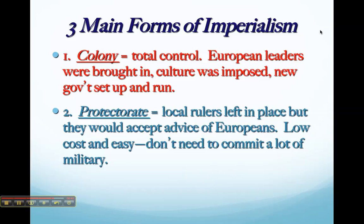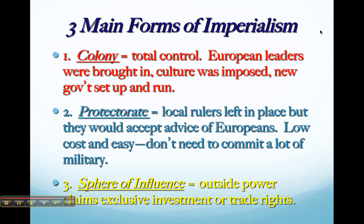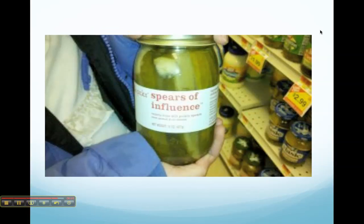You don't even have to go that far — you can set up spheres of influence, where the outside power simply claims exclusive trade rights without dealing with the government at all. This was incredibly popular in the late 1800s. Interestingly, my daughter and I were shopping a few weeks ago and came across a brand of pickles called 'Spears of Influence' — which shows that people really do know this history.